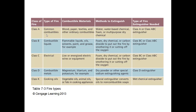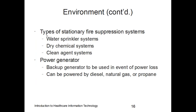Class C fire is an electrical fire involving live or energized electrical wires or equipment. Class D involves combustible metals such as magnesium, potassium, and titanium. Class K involves cooking oils such as vegetable oils, animal oils, or fats in cooking appliances. For fire suppression systems, you can have a standard water sprinkler system, a dry chemical system, or a clean agent system.